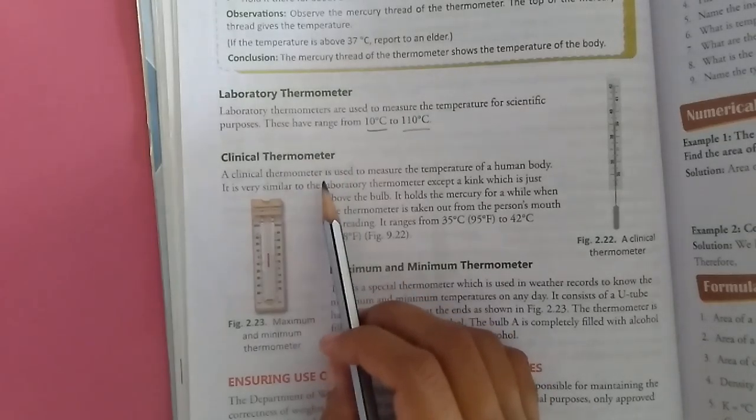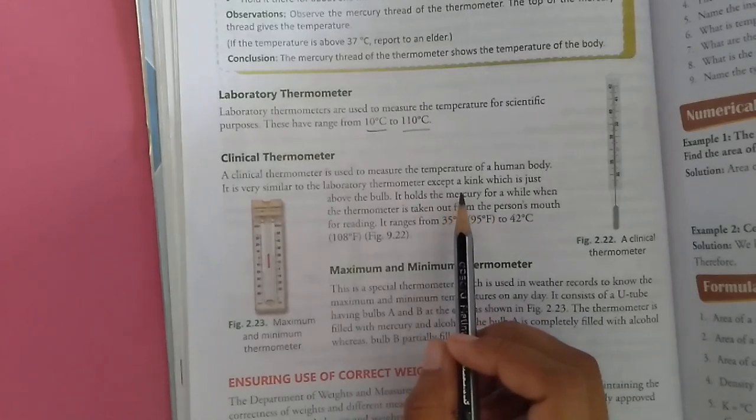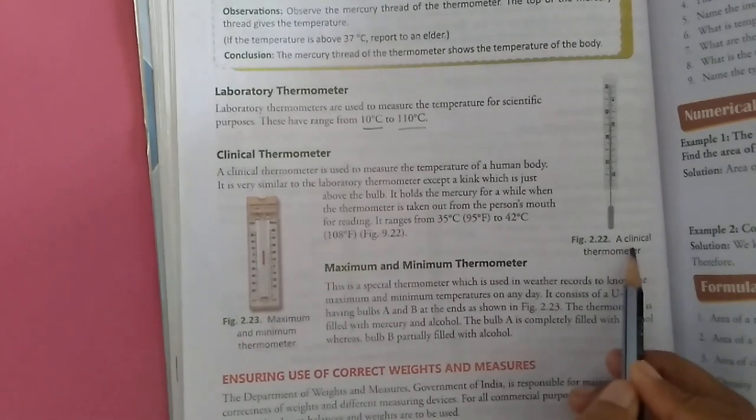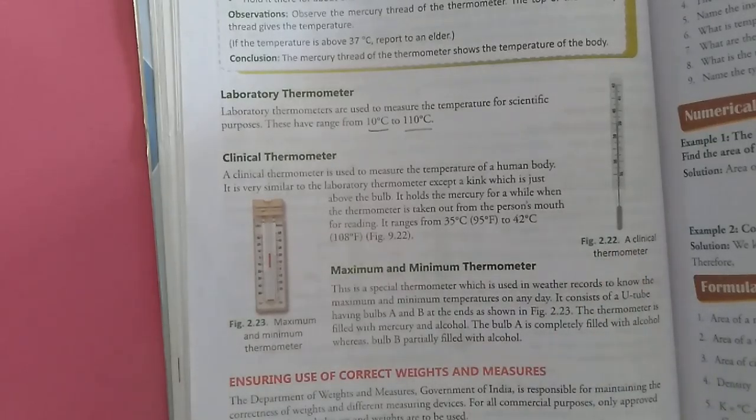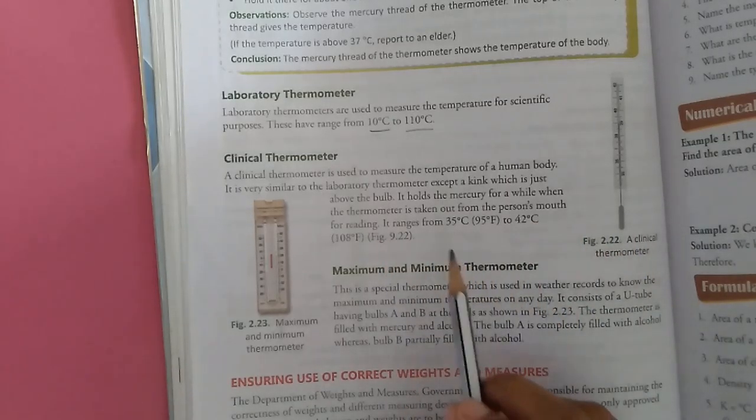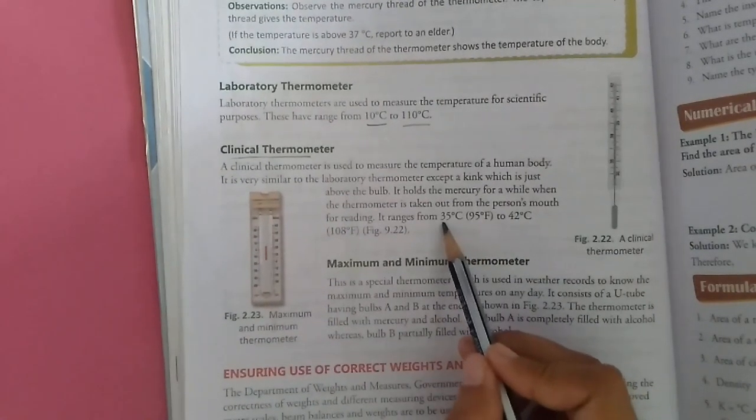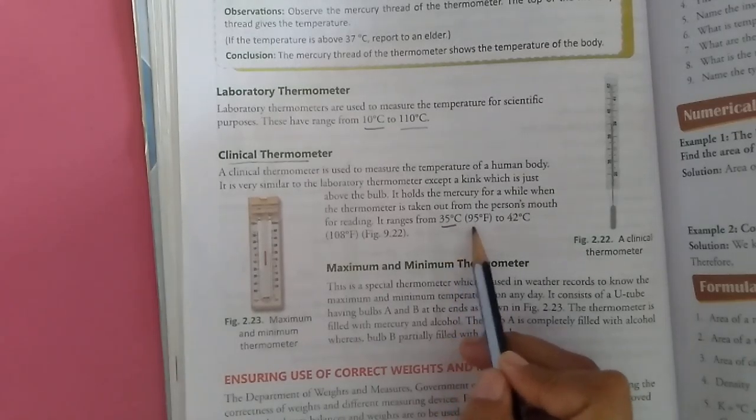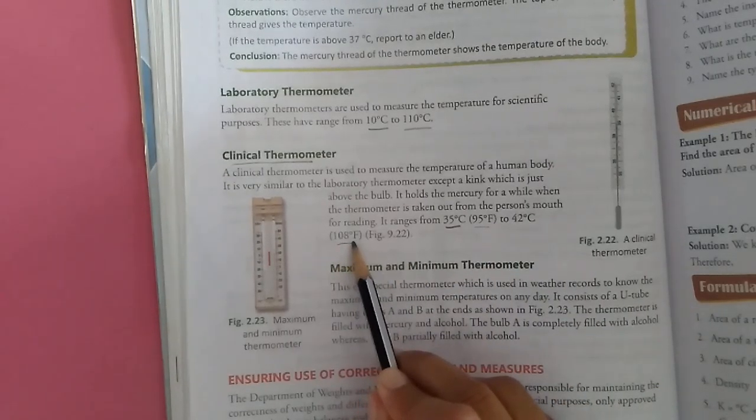Clinical thermometer. A clinical thermometer is used to measure the temperature of a human body. It is very similar to laboratory thermometer, except there is a kink which is just above the bulb. You can see the clinical thermometer diagram. It holds the mercury for a while when the thermometer is taken from the person's mouth for reading. It ranges from 35 degree Celsius to 42 degree Celsius. In Fahrenheit, 35 degree Celsius corresponds to 95 degree Fahrenheit and 42 degree Celsius corresponds to 108 degree Fahrenheit.